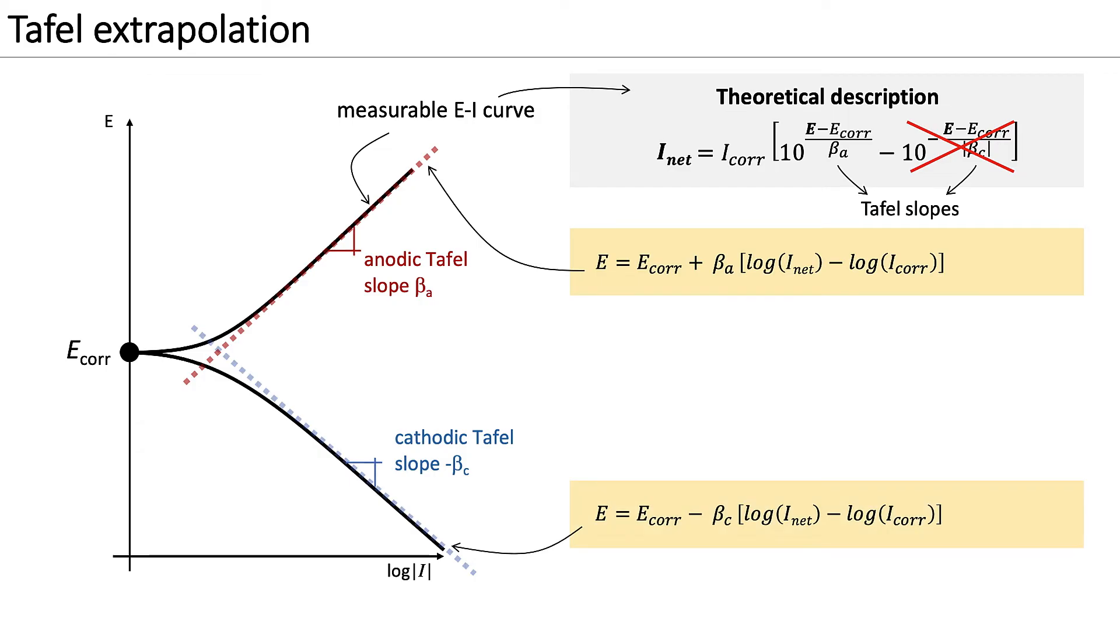The same holds for the cathodic branch. The negative of the cathodic Tafel slope, beta C, is the slope of the linear region of the cathodic part of the curve.